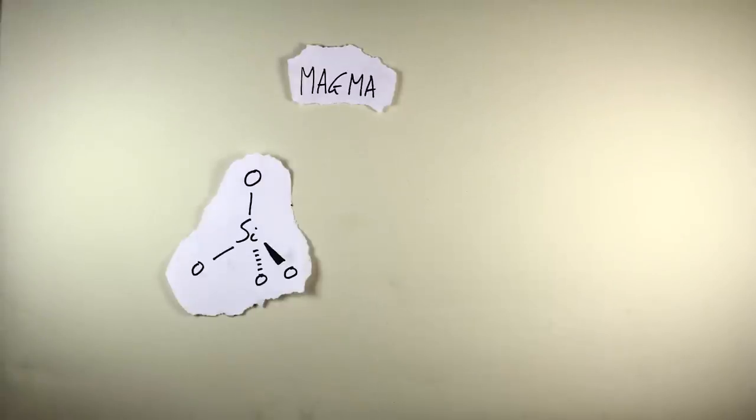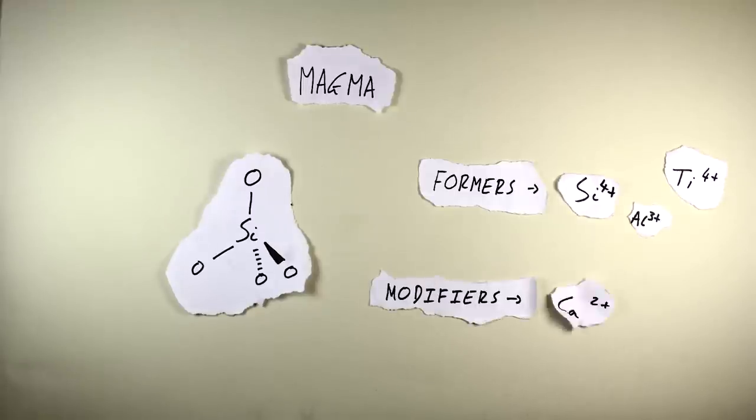The makeup of magma is able to alter its properties. The structure of silicate can be interrupted by the presence of network formers, silicon ions, and modifiers such as magnesium.